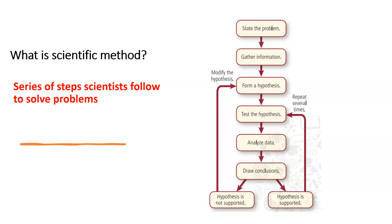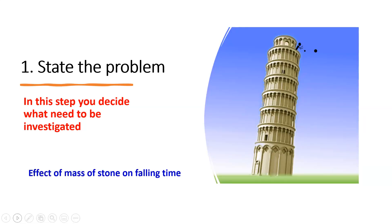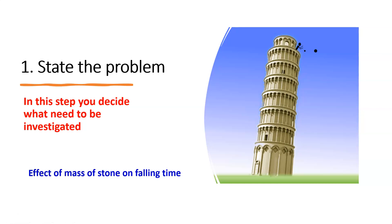Now let us discuss each step in detail. What is the first step? State the problem. In this step, you decide what problem you want to solve, what subject you want to investigate. For example, if you drop a one kilogram object and a ten kilogram object from the top of a building, will they take the same amount of time to reach the ground or different time? So we want to study the effect of mass of an object on falling time.